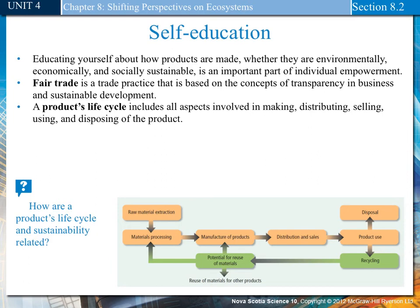Self-education. Educating yourself about how products are made — whether they are environmentally, economically, or socially sustainable — is an important part of individual empowerment. Fair trade is a trade practice based on transparency in business and sustainable development. A product's life cycle includes all aspects involved in making, distributing, selling, using, and disposing of a product. At each point in the product's life cycle, unsustainable practices can occur. It's important to look at all points of the product's life cycle to determine if the product is made, used, and disposed of in a sustainable manner.